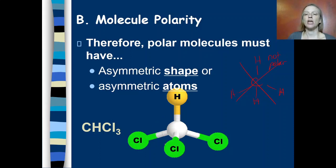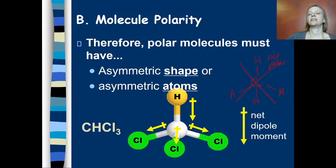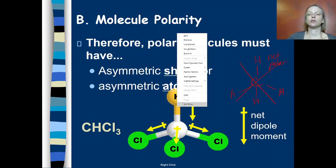However, if I change some of the atoms so that some of them are hydrogens and some of them are chlorines, I have now made this a polar molecule. I have a symmetric shape, but the atoms are not symmetrical. So between carbon and hydrogen, carbon is more electronegative, so the dipole points this way, that bond dipole. And then between carbon and chlorine, chlorine is more than electronegative. So I've got a bunch of downward dipoles over here as well. So overall, there's a net dipole moment downwards because of this asymmetric distribution of atoms.